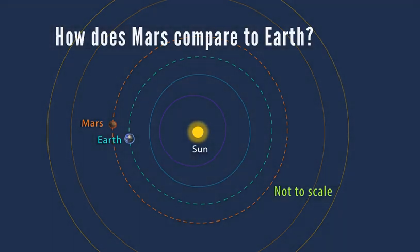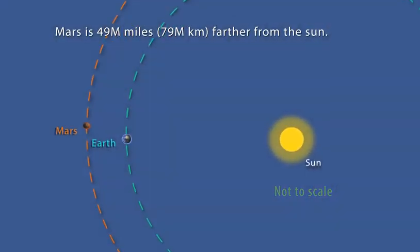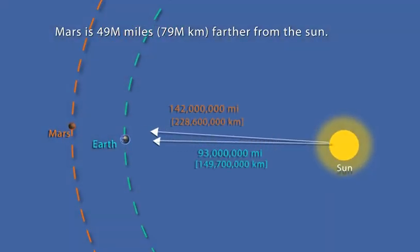Let's look broadly at how Mars compares to Earth. First, Mars is 49 million miles further away from the Sun than the Earth is.